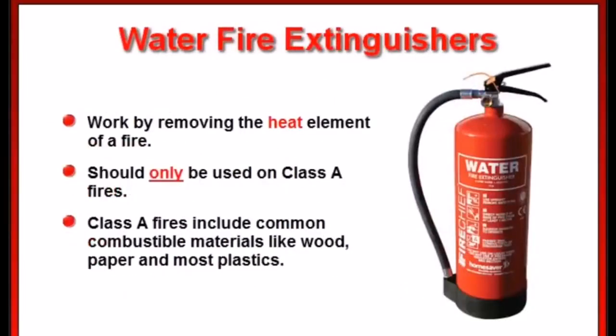Water fire extinguishers work by removing the heat element of a fire. These are for class A fires only, which involve ordinary combustible materials like wood, paper, and most plastics. These fire extinguishers should never be used on a class B or C fire. Class B fires involve flammable liquids like gas, and using one on those could spread the flammable liquid and make it worse. Class C fires involve electrical equipment, and water and electricity don't mix.